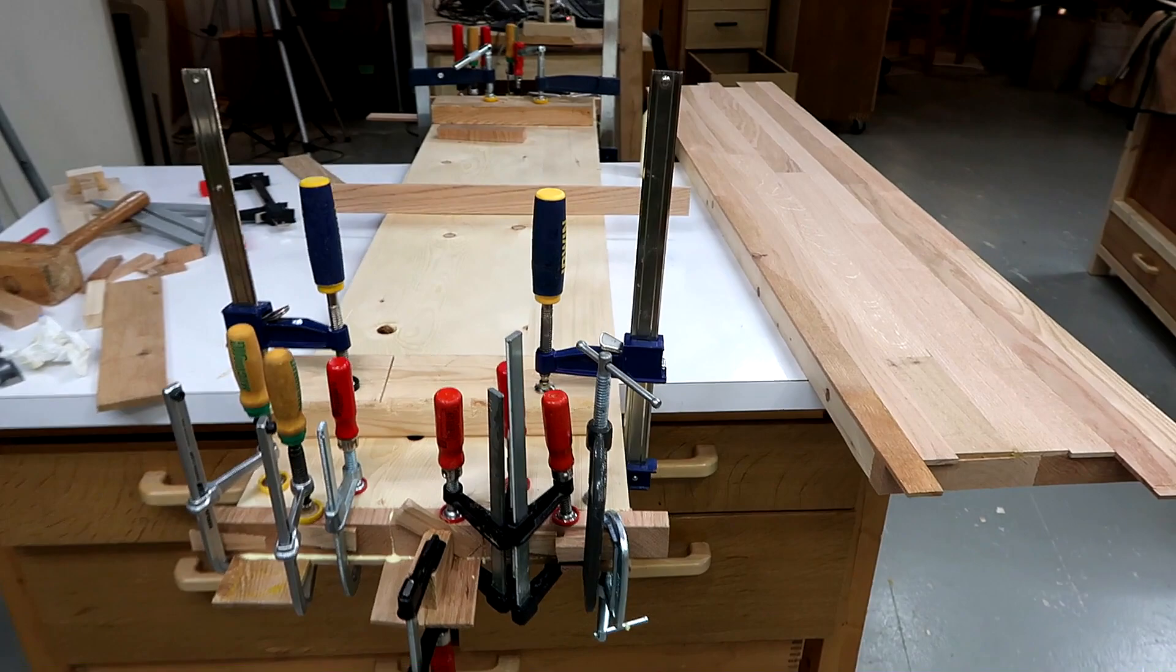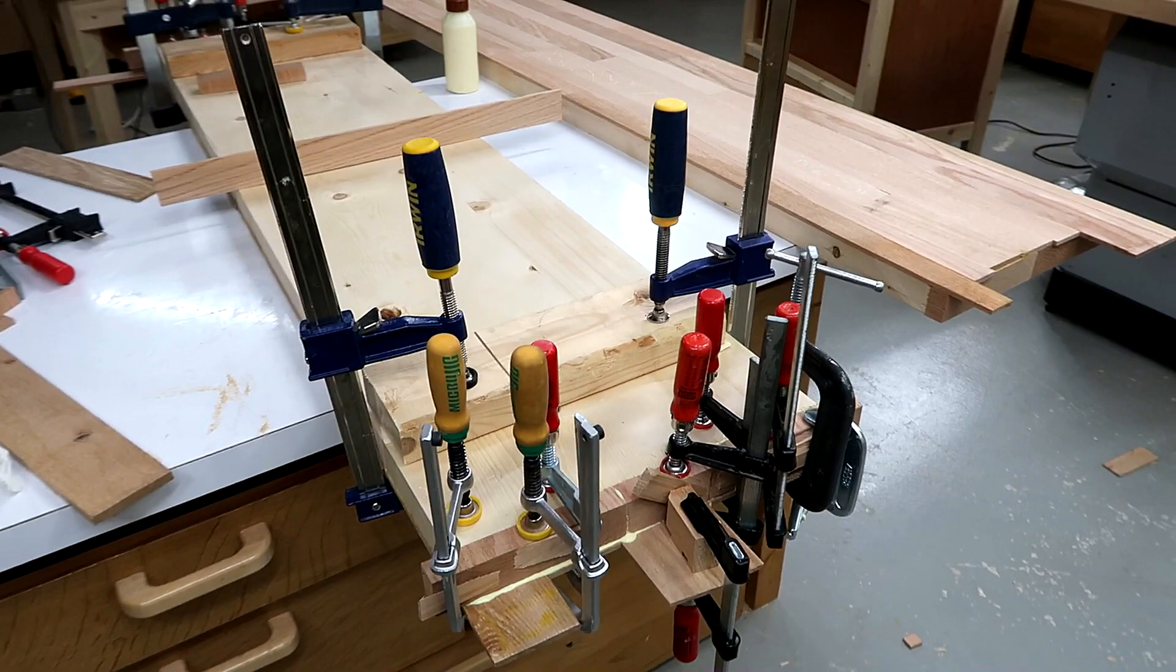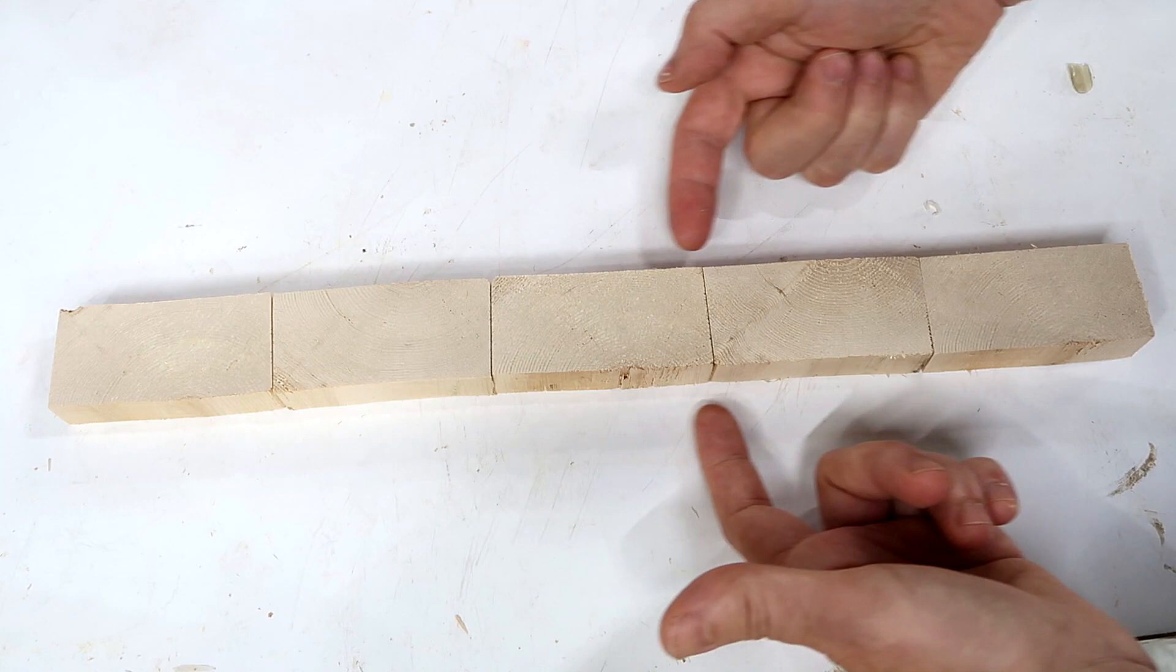And in terms of avoiding tabletops cupping, it's important to put varnish on the top and bottom, otherwise if the humidity increases, there will be more humidity on the bottom than the top, so the bottom expands, and the whole tabletop will cup like that a little bit.